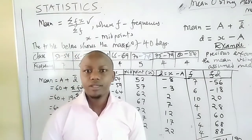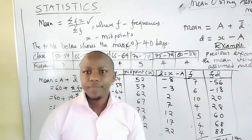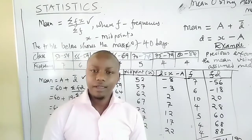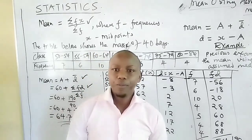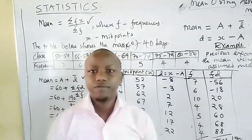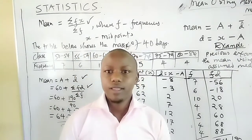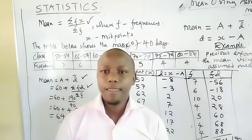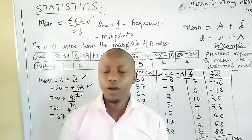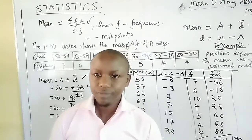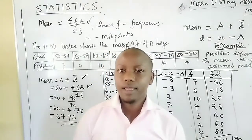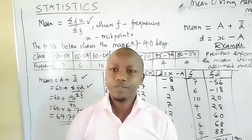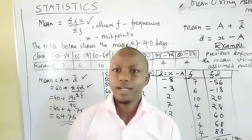That's all — we've seen how to get the mean using the general formula where mean equals sum of fx divided by sum of f, and also using the assumed mean method. In the next class we will be studying measures of dispersion: standard deviation, range, interquartiles, percentiles, and a few other things as we conclude the topic. Subscribe to Shifting Grades and share the link. Thank you.